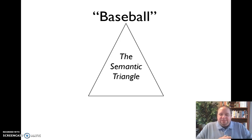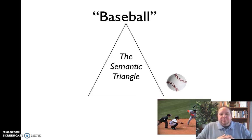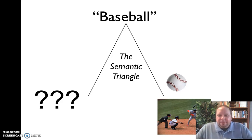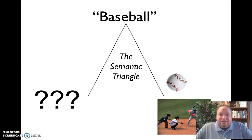We can do the same thing with 'baseball.' The symbol is just that collection of letters. Denotatively, the dictionary tells us it's a ball with specific parameters — weight, size — and a game with one player at bat, nine in the field, three strikes, four balls, and so forth. That's baseball objectively. But connotatively, baseball could mean very different things: maybe you love it, hate it, think of playing it as a kid, going to your children's games, or you just don't like it. That symbol will carry different meanings for each individual.